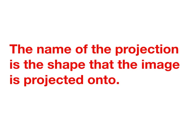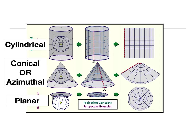The name of the projection is the shape that the image is projected onto: cylindrical, conical — also called azimuthal — and planar, which is just a flat surface like a piece of paper.